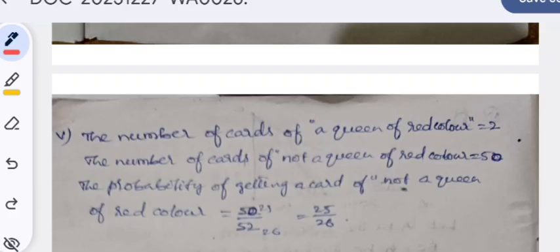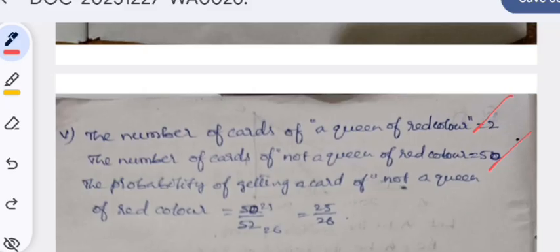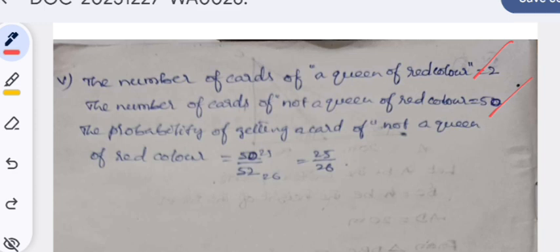The number of cards of a queen of red color: 2. Number of cards not a queen of red color: 2 to be subtracted from 52, so 50 cards. The probability of getting a card not a queen is 50/52, which gives 25/26. So this is the complete question paper with answers brought for your preparation purpose.